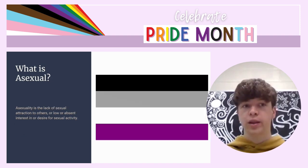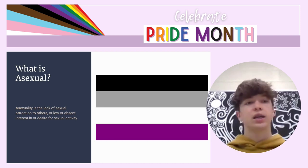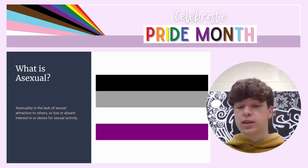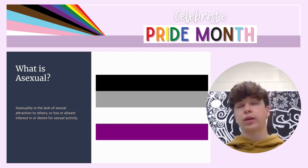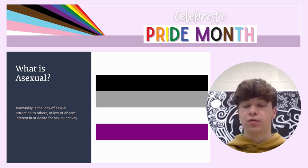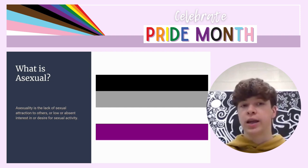What is asexual? Asexuality is the lack of sexual attraction to others, or a lower or absent interest and desire for sexual activity. It does not matter what your sexual orientation or gender is — this is about sexuality. Asexuality also consists of aromantic and likewise allomantic identities. Asexual people don't feel the desire to engage in sexual activity, and aromantic people don't have a desire to engage in romantic activity, but they can also identify as gay, straight, non-binary, etc.